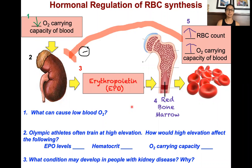In this slide, I will be explaining the hormonal regulation of red blood cell synthesis. Red blood cells are very important for oxygenation. The number of red blood cells we need and the level of oxygen we need in our body needs to have some homeostasis in order for our body to meet its metabolic demand. Let's look at this pathway in which we're regulating the homeostasis of red blood cell count and oxygen carrying capacity.